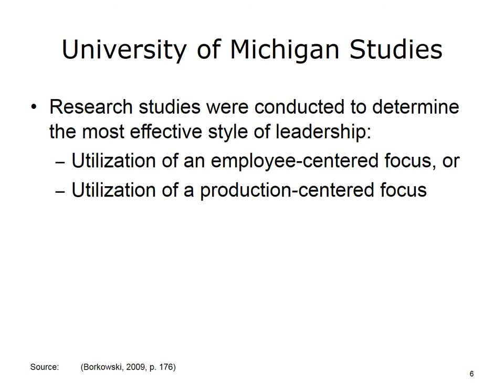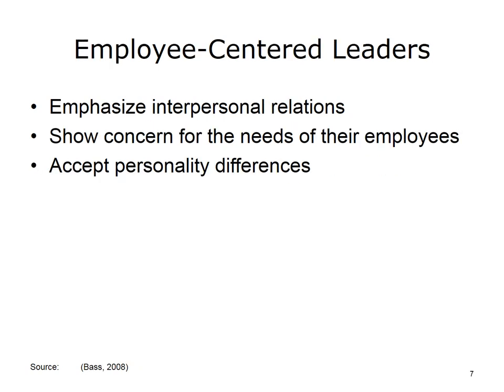These research studies were conducted to determine the most effective style of leadership. In the late 1940s, researchers at the University of Michigan were working to identify the independent dimensions of leadership behavior. The researchers focused on identifying the most effective style of leadership based on two dimensions: utilization of an employee-centered focus and utilization of a production-centered focus. When researchers looked at employee-centered leaders, they found that those types of leaders emphasized interpersonal relations. The employee-centered leader shows concern for the needs of his or her employees and accepts the traits and personality differences encountered among the different employees in the organization.